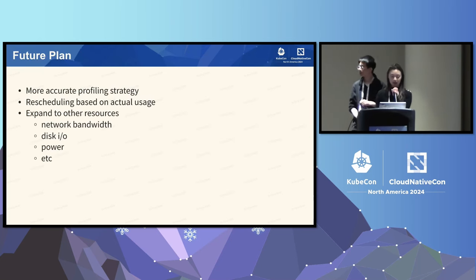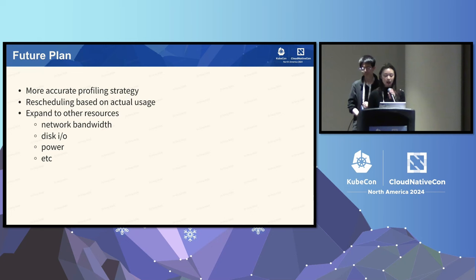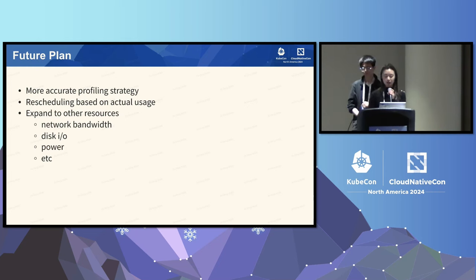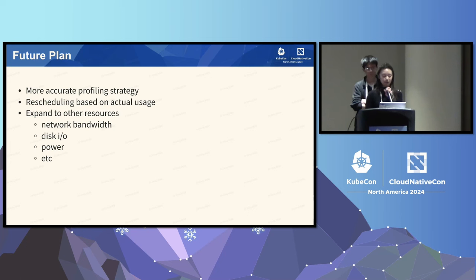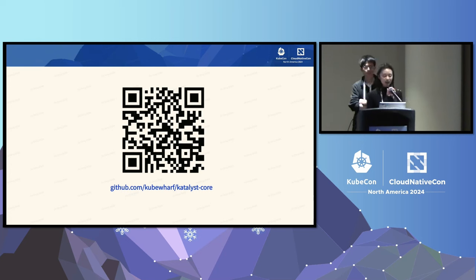I'll talk about some future plans and improvements to SPD and profiling. The first is to have more accurate profiling strategy — right now we mostly take the max of all the data, which is a more conservative strategy. For better resource utilization, we could have a better mathematical model. The second is that profiling is an estimate of historical data, which is very likely to differ from actual usage, so we can have real-time consumption for rescheduling, empowered by Godel. Right now we have memory bandwidth and network bandwidth, but this could be applied to other resources like disk IO, power, etc. This is the Catalyst QR code — it's one of the projects of KubeWharf, which is the open source of ByteDance Kubernetes. Feel free to take a look and play around.